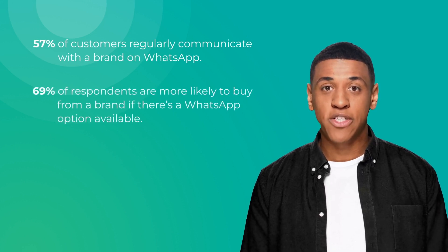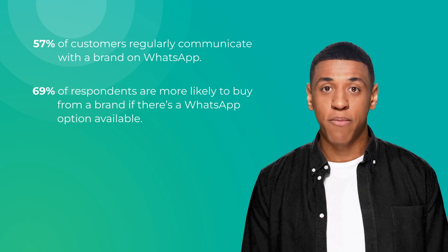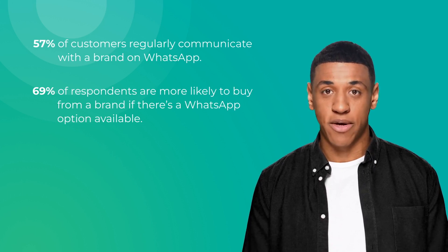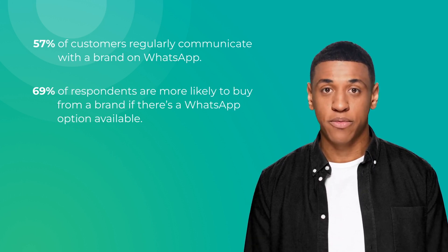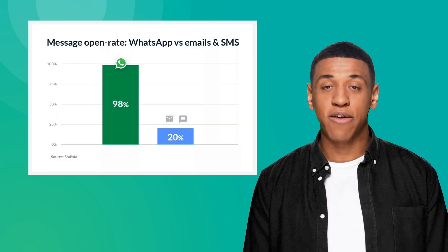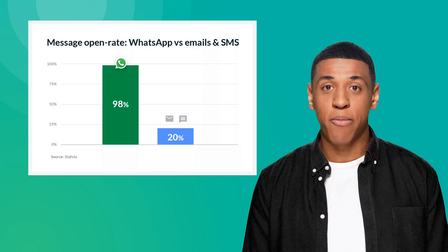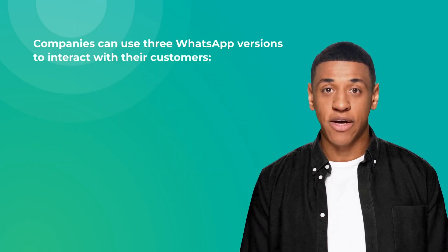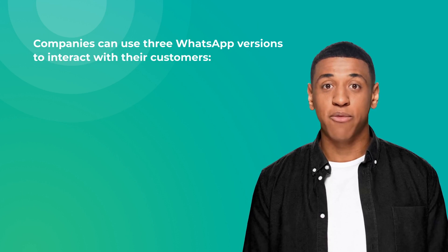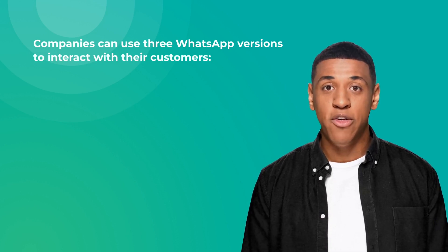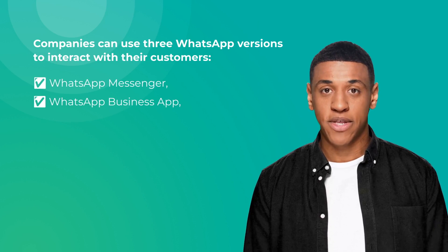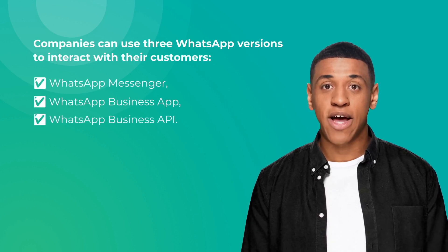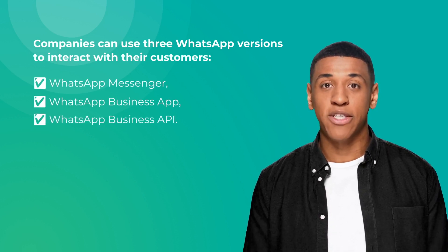69% of respondents are more likely to buy from a brand if there's a WhatsApp option available. WhatsApp has a 98% open rate, while email has an open rate of only 20%. Companies can use three WhatsApp versions to interact with their customers: WhatsApp Messenger, WhatsApp Business Application, and WhatsApp Business API. Let's consider the difference between them.